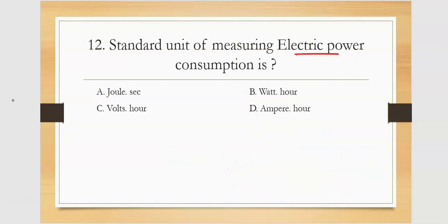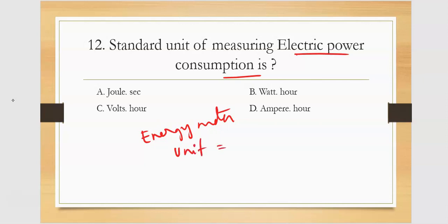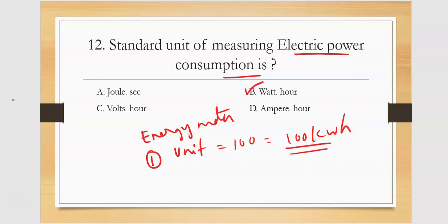Standard unit of measuring electrical power consumption — LR, LN, or TV? The electrical energy meter measures energy. You know, when you consume units — for example 100 units consumed means 100 kilowatt-hours. So the unit used is kilowatt-hour. Watt-hour is the right answer. Ampere-hour is used only for battery ratings. Volt-hour is not relevant — it's wrong. Joule-second is also wrong.